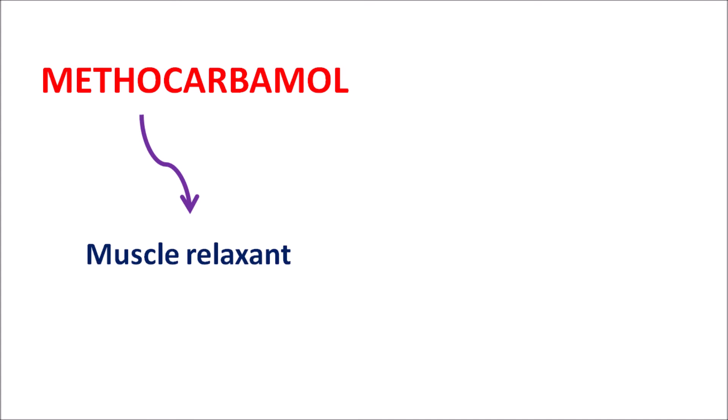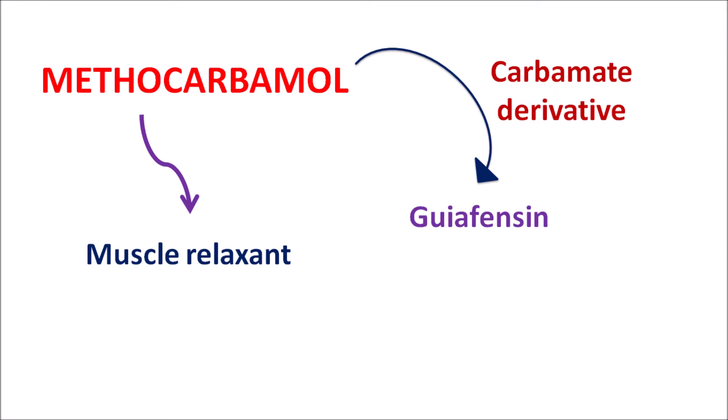What is methocarbamol? Methocarbamol is one of the muscle relaxants. This drug is a carbamate derivative of another drug, guaifenesin. Guaifenesin is one of the expectorants which is used in different types of cough syrups. But methocarbamol is a carbamate derivative of this drug which can be used as a muscle relaxant.